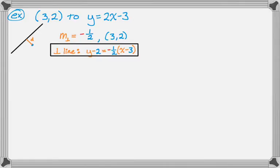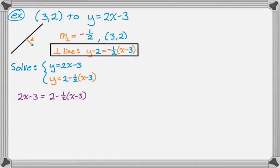The next thing we need to do is find the intersection of this line we just wrote with the given line. That amounts to solving a system of equations: y equals 2x minus 3, and y equals 2 minus 1 half times the quantity x minus 3. They're both equal to y, so I'm going to set them equal to each other. I like to clear denominators, so I'm going to multiply through by 2. So 4x minus 6 equals 4 minus the quantity x minus 3.